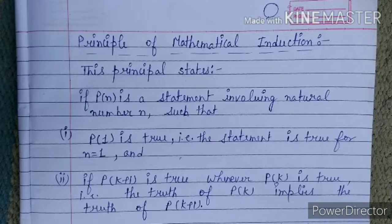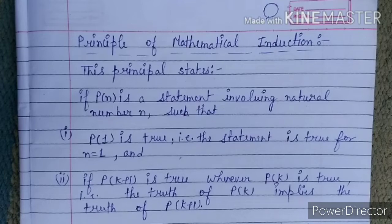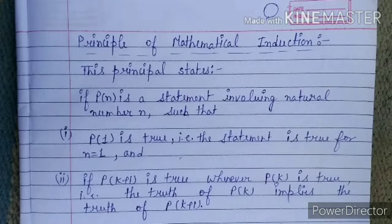In mathematical induction we have three steps to prove every statement. Step one: put n = 1 and verify the condition is true. Step two: assume that P(k) is true. Step three: prove that P(k+1) is also true. If all three steps hold, the statement is true for all natural numbers.